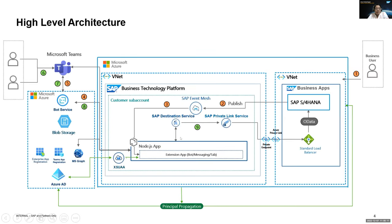From a high-level architecture perspective, what you see on the extreme left is the Microsoft Azure platform and then we have the BTP platform. From the SAP LOB systems, here we are integrating with SAP S4 HANA. There are a few technical services that we will leverage from both platforms, and you will see how seamlessly we can integrate these two platforms to create such interoperable architectures. From the Azure platform, we have Azure AD for user management and the user store.